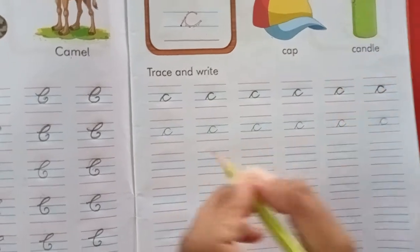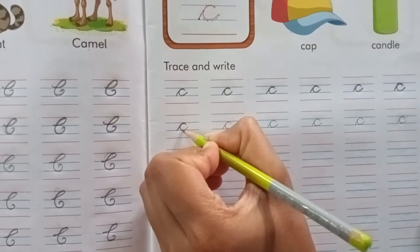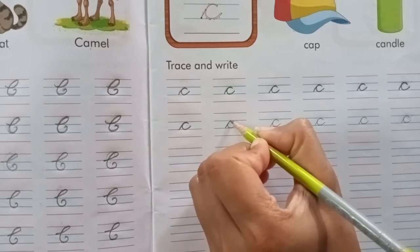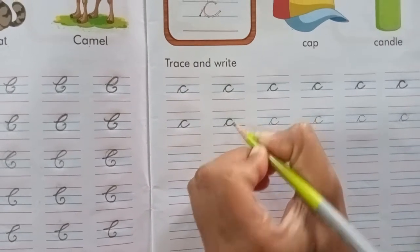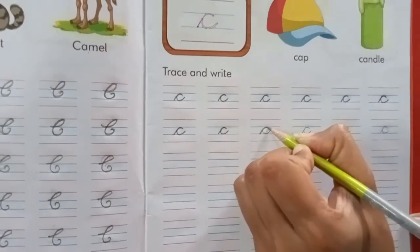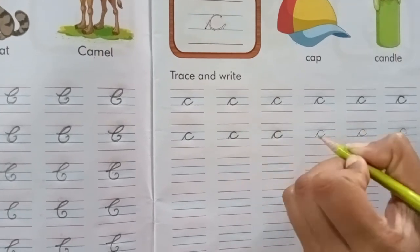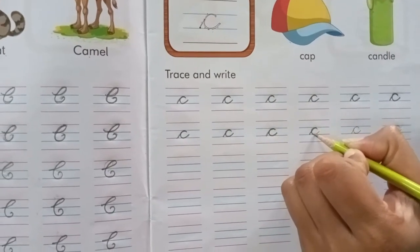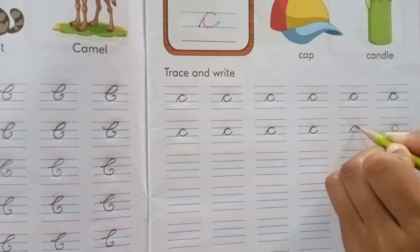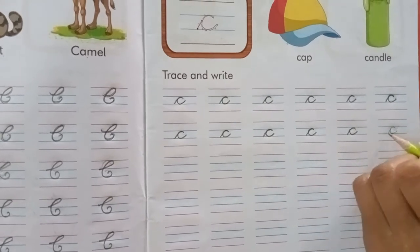Nice. Trace slowly, slowly. Okay. Yes. Like this. Very good. Nice. We are tracing letter C.